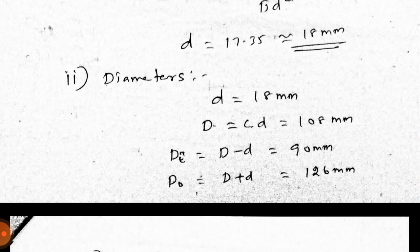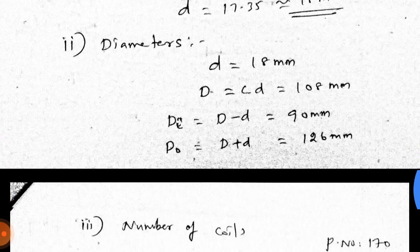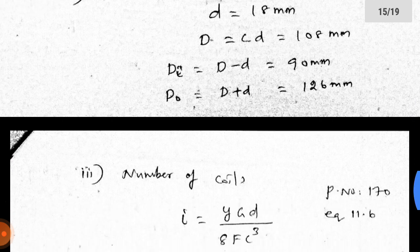The second step gives the diameters. Wire diameter d = 18 mm. Mean coil diameter D = C × d = 6 × 18 = 108 mm. Inner diameter D1 = D − d = 90 mm. Outer diameter D2 = D + d = 126 mm.